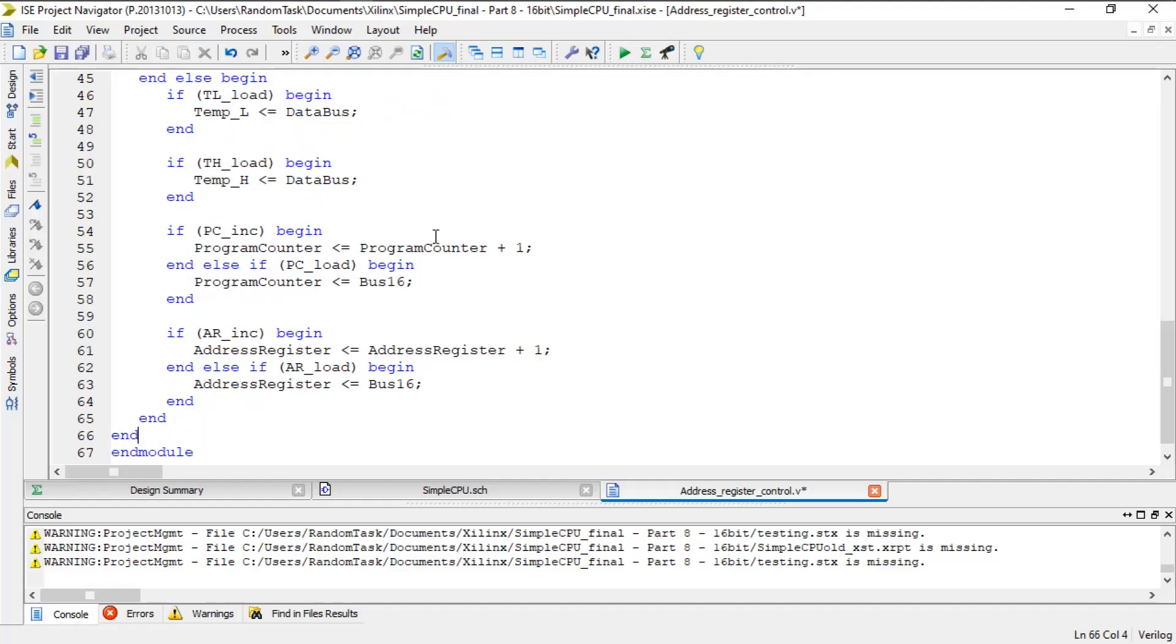For the program counter and address registers, only one of the control lines should be set, but to cover the possibility of both being active, they are placed in an if-else-if block. If the increment line is set, the value of that register is incremented by one. If the load line is set, then the register is loaded with the value that is on the bus 16 wire.